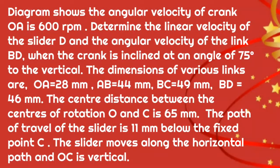In the diagram, the angular velocity of the crank OA is 600 RPM. Determine the linear velocity of slider D and angular velocity of link BD, when the crank is inclined at an angle of 75 degrees to the vertical. The dimensions of various links are: OA = 28 mm, AB = 44 mm, BC = 49 mm, BD = 46 mm. The center distance between the center of rotation O and C is 65 mm. The path of travel of the slider is 11 mm below the fixed point C. The slider moves along a horizontal path and OC is vertical.